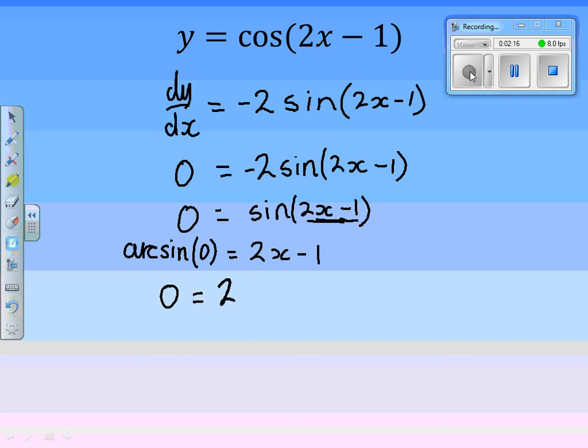It could be 0. So we could have 0 is 2x minus 1. But can somebody tell me another value which it could be? Arcsin of 0 is 0, but what else could it be? 2π, another one in between 0 and 2π? Yes, π.